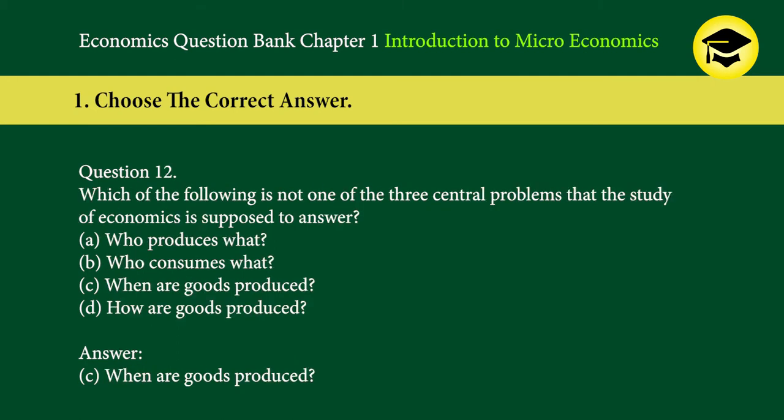Question 12: Which of the following is not one of the three central problems that the study of economics is supposed to answer? A. Who produces what? B. Who consumes what? C. When are goods produced? D. How are goods produced? Answer: C. When are goods produced?